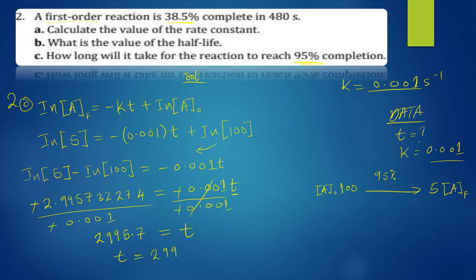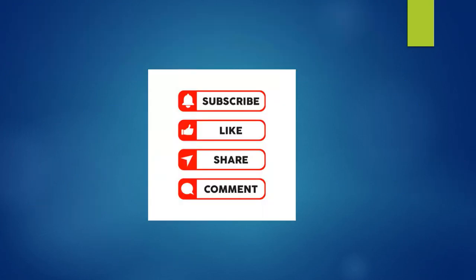Rounding to four significant figures, t ≈ 2996 seconds. Time is measured in seconds, so that is your final answer for part (c). Don't forget to subscribe, like, share, and comment. Thank you for watching.